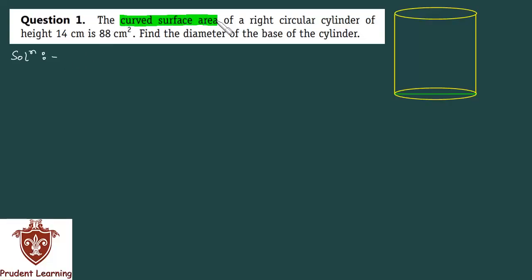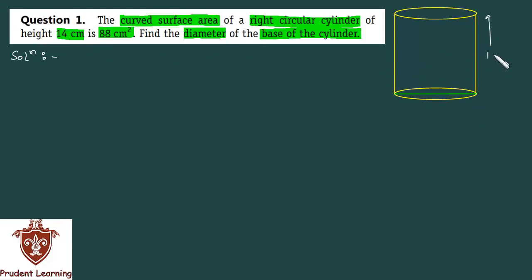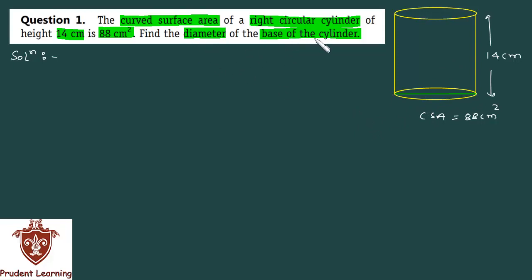The curved surface area of a right circular cylinder of height 14 cm is 88 cm squared. Find the diameter of the base of the cylinder. In this question, you have a right circular cylinder with height 14 cm, and the curved surface area of this cylinder is 88 cm squared. With this information, you have to find the diameter of the base of the cylinder.